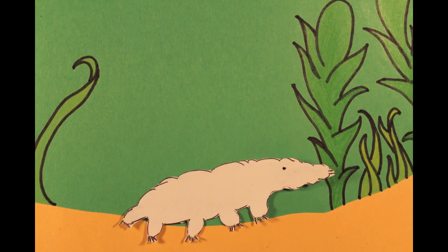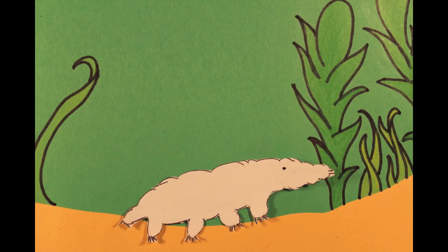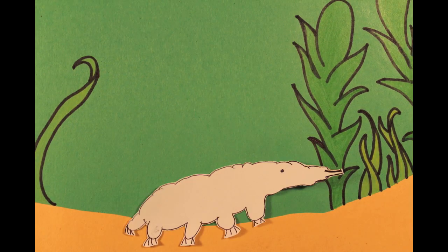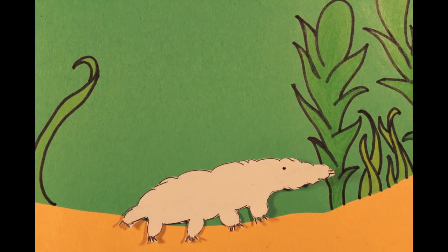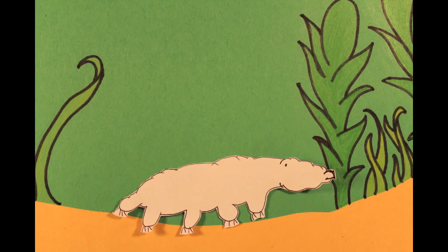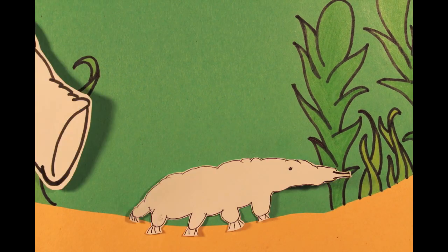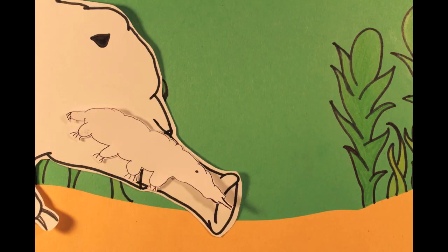Most of them are herbivores who graze on moss and algae. Some of them are carnivores who prey on smaller tardigrades.